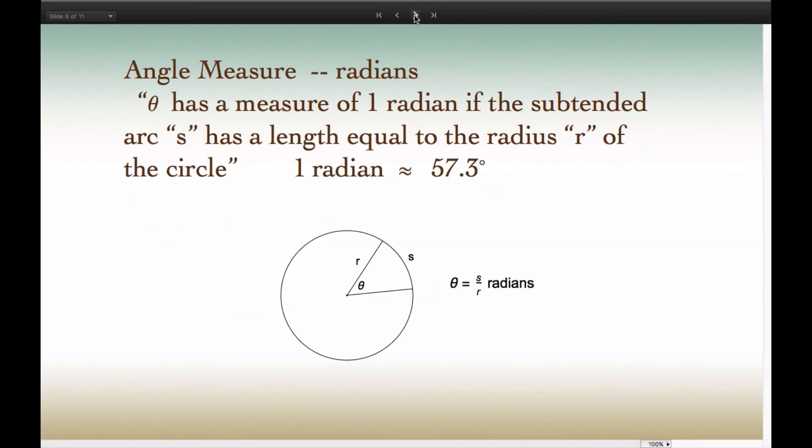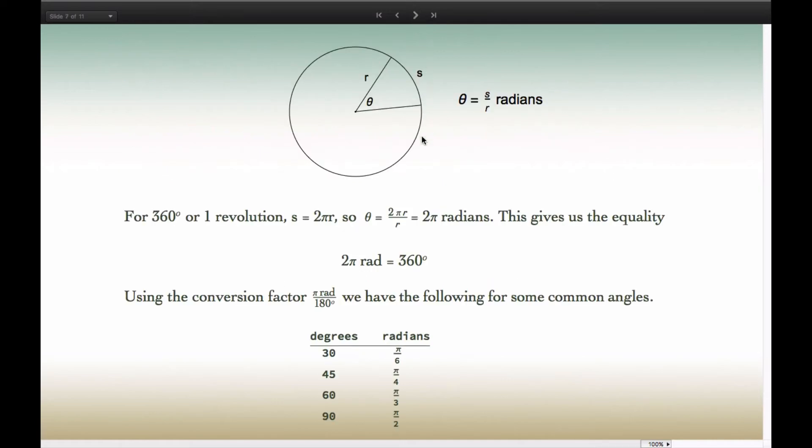An angle theta has a measure of one radian if the subtendent arc has a length that is equal to the radius of the circle. So one radian is approximately 57.3 degrees. Notice we can define theta in terms of the arc length and radius this way. If the arc length is an entire revolution, or 360 degrees, S will be 2πr, the circumference of the circle. So the corresponding angle would be 2πr over r, or 2π radians. And this gives us the equality that 2π radians is the same as 360 degrees.